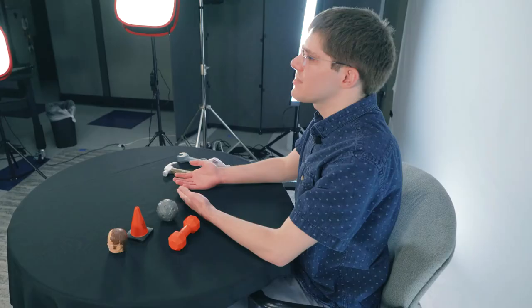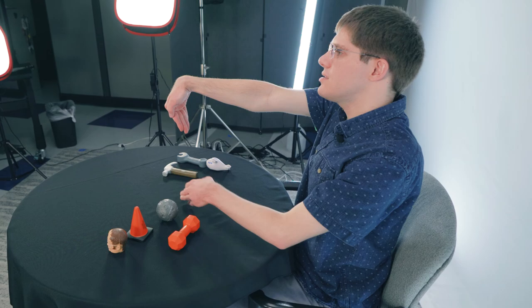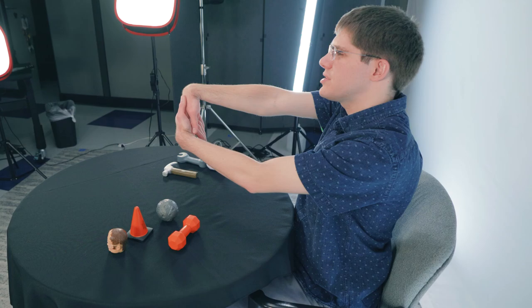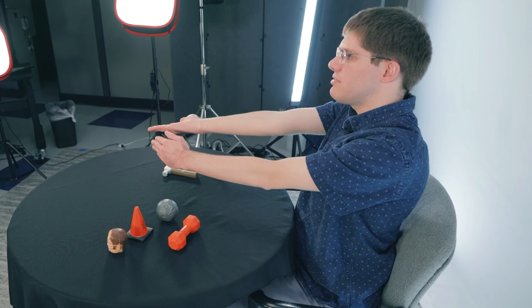Alright, next is a simple wrist stretch. Hold out your arm like this. Point your fingers to the ground. Use your other hand to pull towards yourself. You should feel a good stretch from this. You want to hold this for about 30 seconds. I'm going to skip that for time.